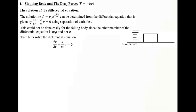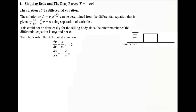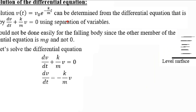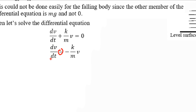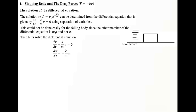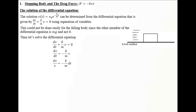Let's solve the differential equation dV/dt plus K/M times V equals 0 together. The method is separation of variables: we move the V terms to one side and the T terms to the other. We have two variables, V and T. Moving V to the denominator and DT to the other side gives us dV divided by V equals minus K over M multiplied by DT.